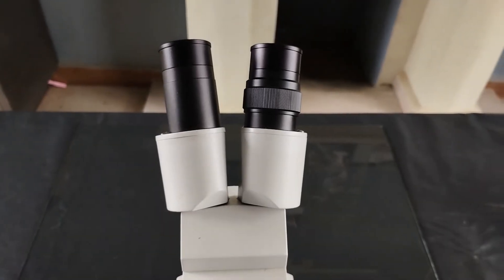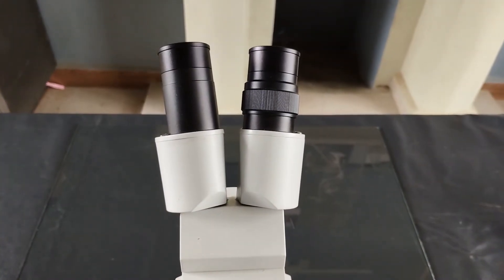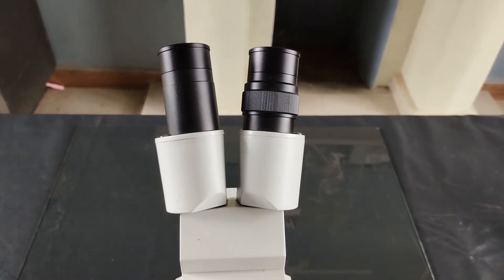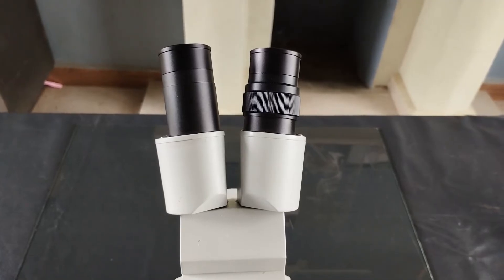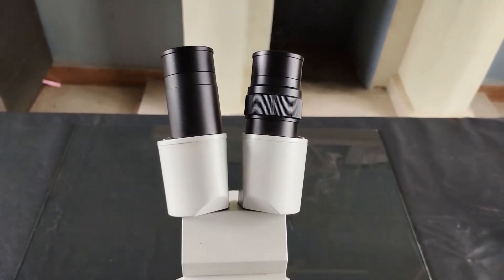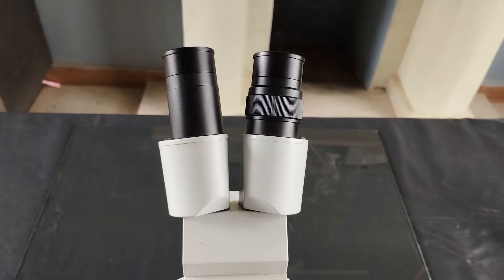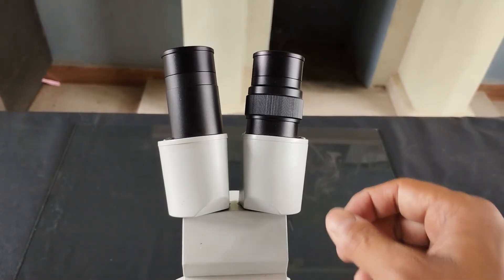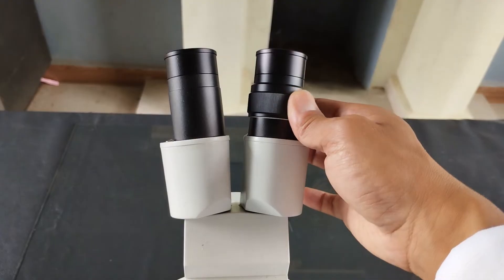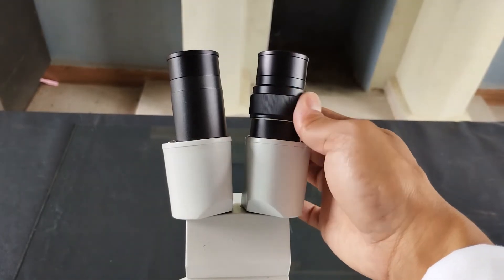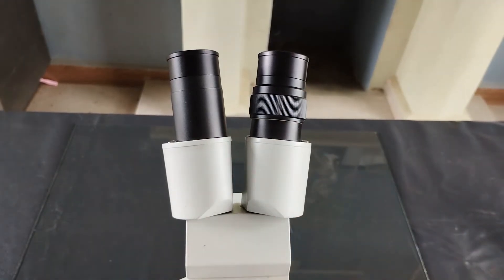Now, before actually beginning to examine the specimen, you'll need to make sure that the focus of both eyepieces are aligned with respect to the powers of both the viewer's eyes. Just as in the binocular light microscope that I've covered in a previous episode, the ocular tube of one of the eyepieces in a stereo microscope, usually the left eyepiece, can be rotated to adjust its focus.